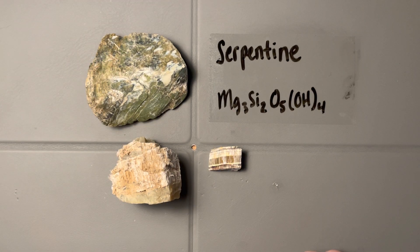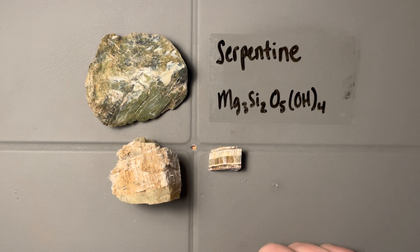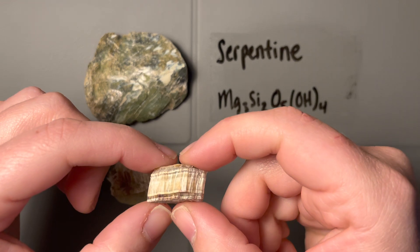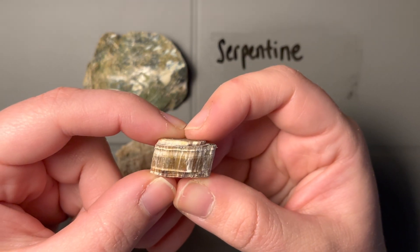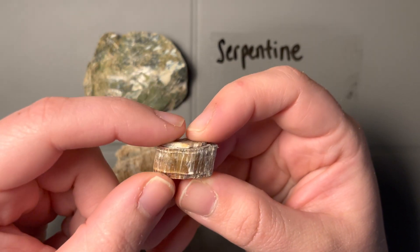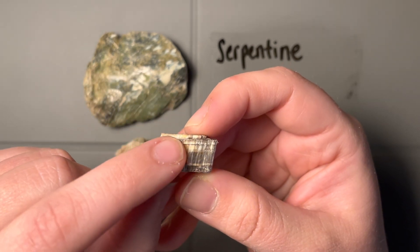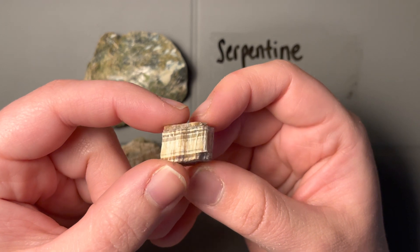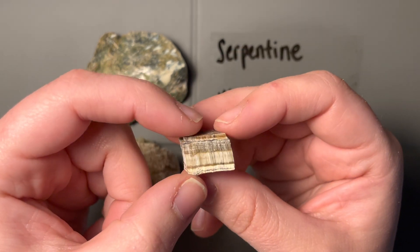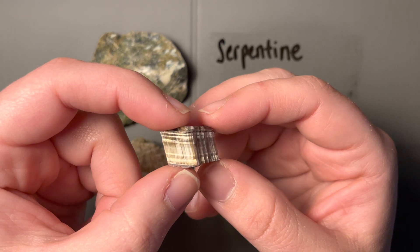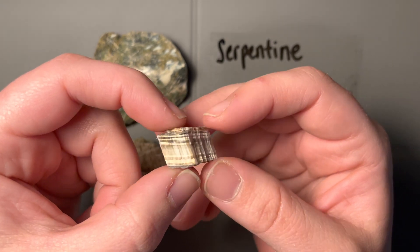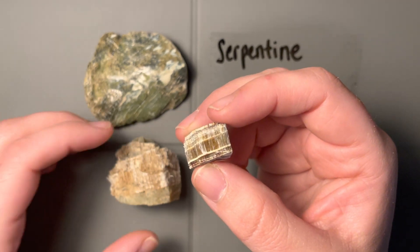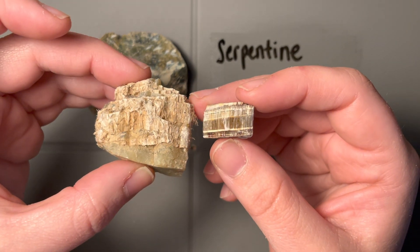It's typical of the rocks that are being serpentinized for them to turn out green like this. So green is the first color indicator I think of. The next thing I look for is this ribboning pattern—this is the fibrous growth. The crystal habit of this would be fibrous, and this fibrous growth is actually what made serpentine such a great insulator and why it was put into so many materials.